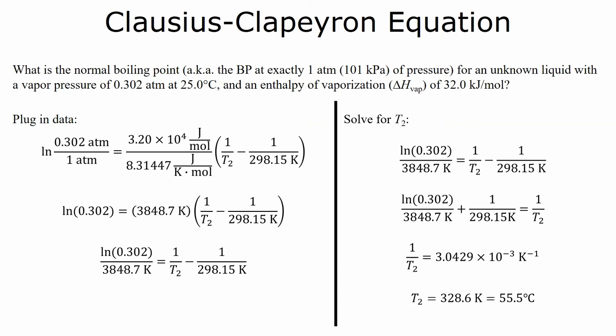Now, your initial answer is going to be in Kelvin. It's sometimes useful to convert that to Celsius, but only if you're asked to. So, this makes sense that if we want to raise the vapor pressure from 0.302 atm to 1 atm, we're going to have to increase the temperature from 25 degrees to 55.5 degrees Celsius.